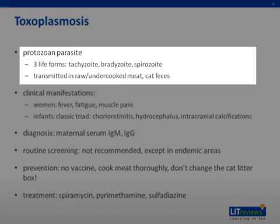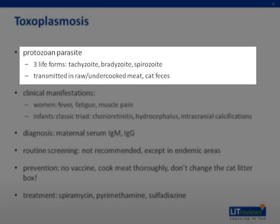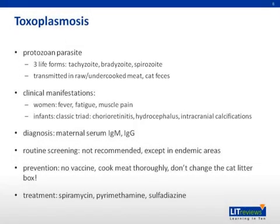Toxoplasmosis is a parasite that exists in three life forms: the tachyzoite, which replicates intracellularly; the bradyzoite, which forms cysts; and the sporozoite, that is environmentally resistant. The parasite is transmitted in raw or undercooked meat and in cat feces. While the risk of infection is greater beyond 20 weeks gestation, the severity of infection is greater in early pregnancy.